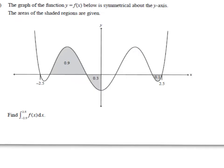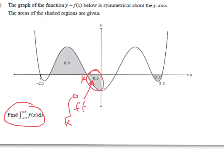On to Part B. The graph of the function y equals f of x is symmetrical about the y-axis. The areas of the shaded regions are given. This question is asking you to find an integral — it's not asking you to find an area. So just be careful to remember that area will always be positive. Between 0 and k here, the integral is negative 0.3 because it's below the x-axis.